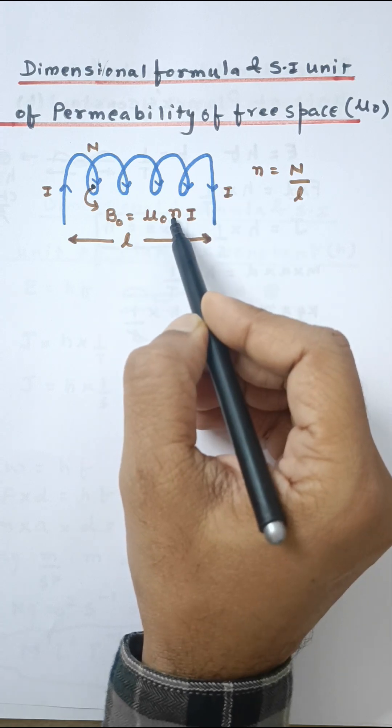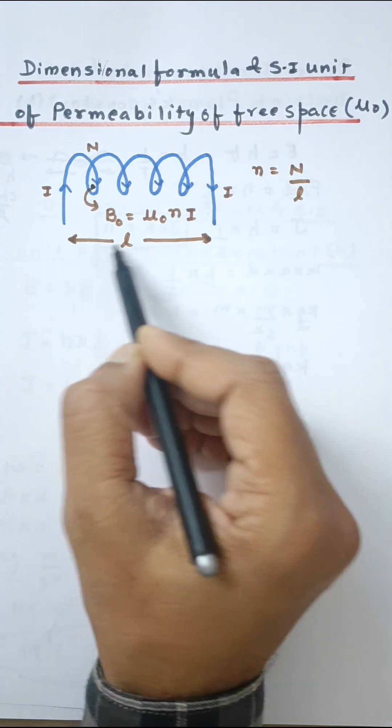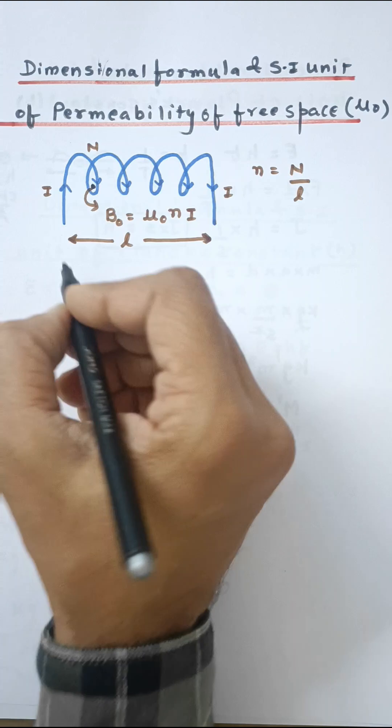I is the current in the solenoid. Small n is the number of turns per unit length, where capital N is the number of turns. L is the length of the solenoid. So small n is equal to N upon L. I am going to use this formula.